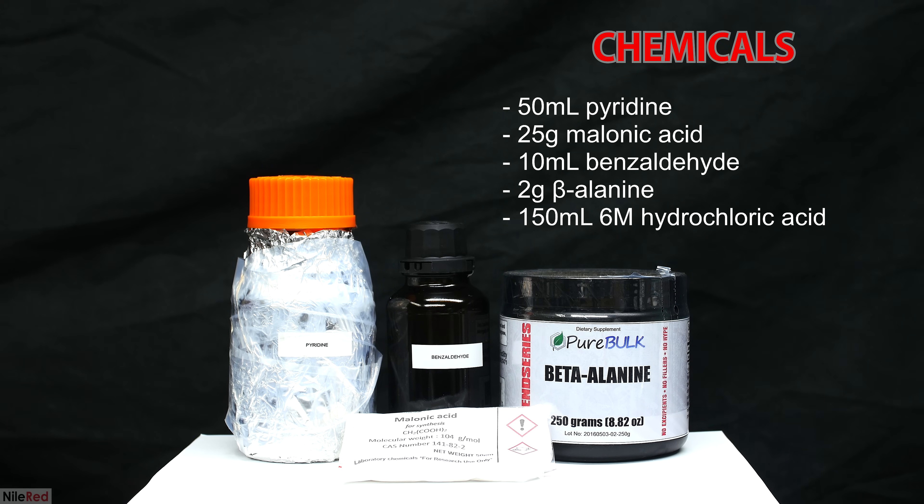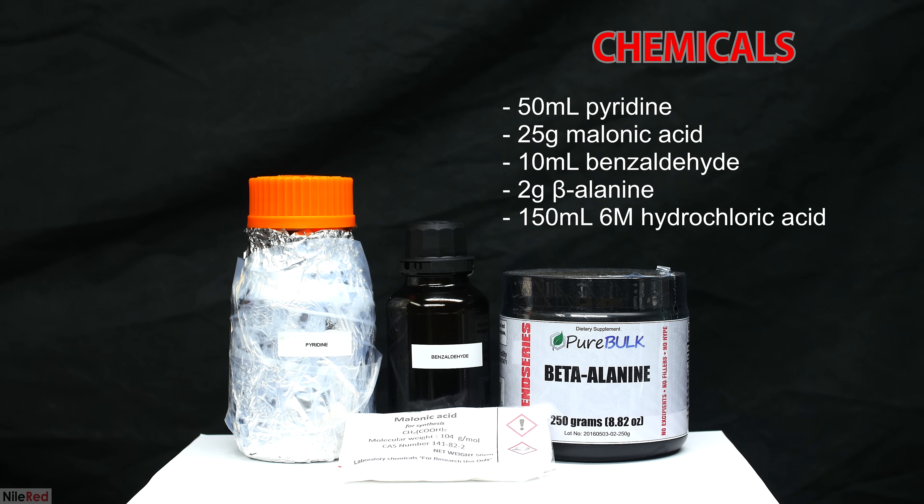Here are the chemicals that I used. From left to right at the back, we have pyridine, benzaldehyde, and beta-alanine. In the front we have malonic acid. In total I used 50 milliliters of pyridine, 10 milliliters of benzaldehyde, 25 grams of malonic acid, and 2 grams of the beta-alanine.